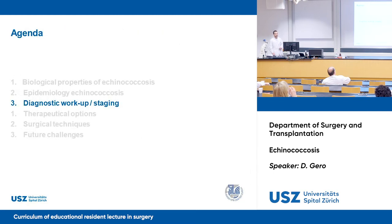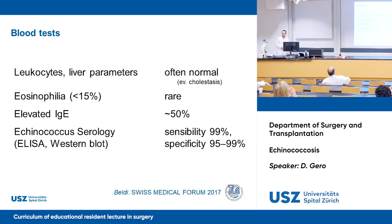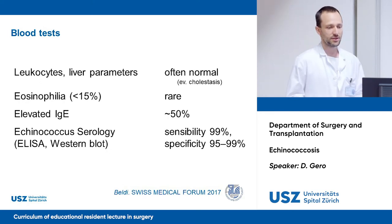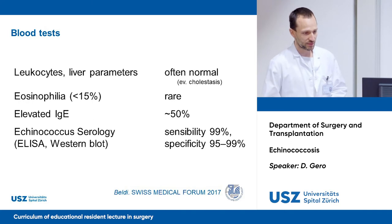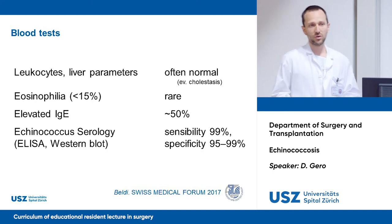Now I'd like to talk about diagnostic workup and staging. When we have suspicion of echinococcosis, we can perform a blood test. Leukocytes will most frequently be normal; we may find cholestasis or eosinophilia, sometimes elevated immunoglobulin A. The most sensitive and specific test is echinococcus serology by ELISA or Western blot.